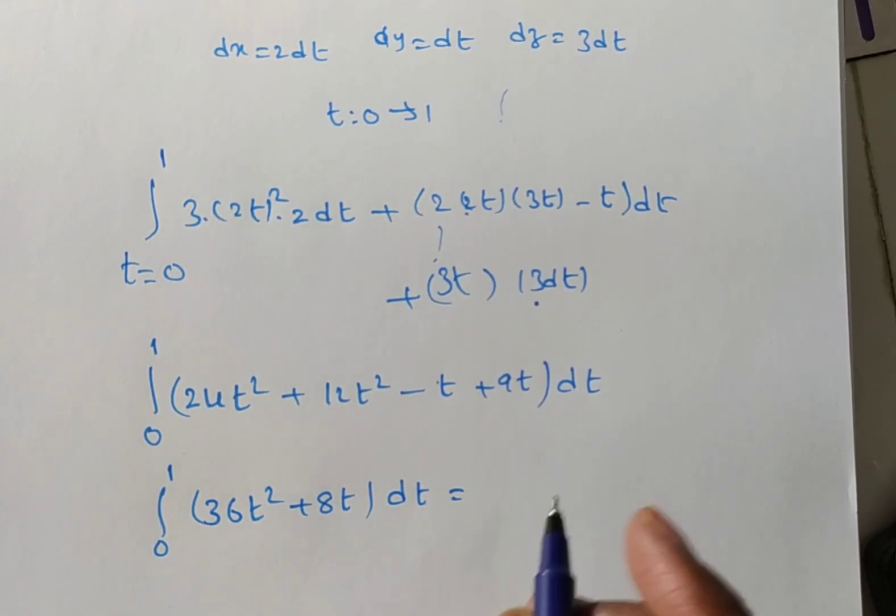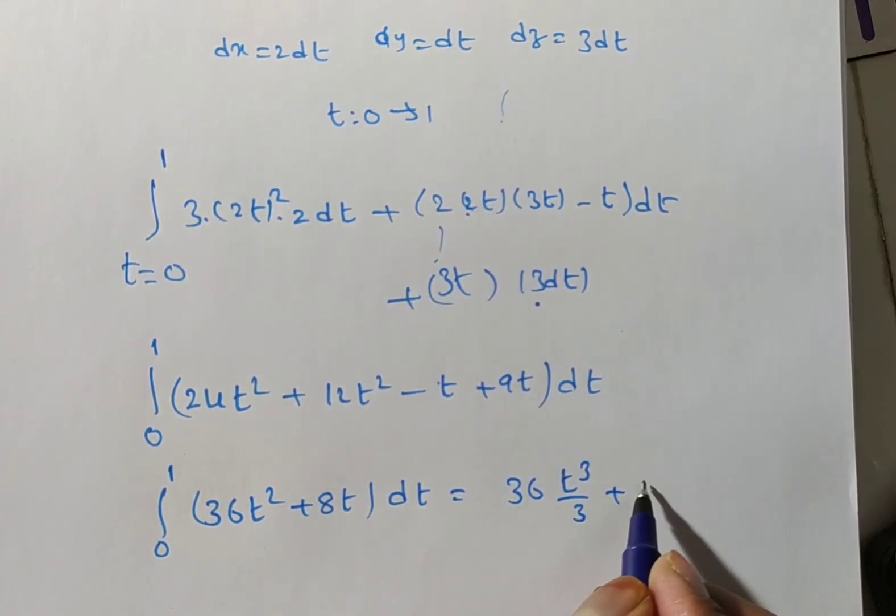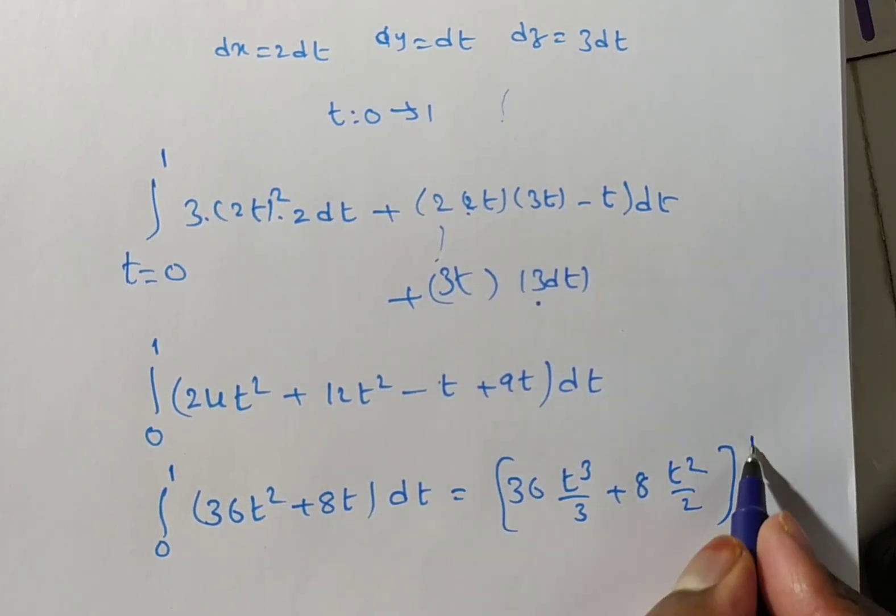Now, integration, do it. What is the integral of t square? t cube by 3 plus 8 into, what is the t integration? t square by 2. Limits from 0 to 1.